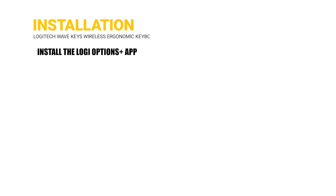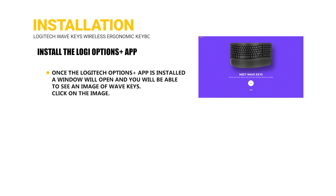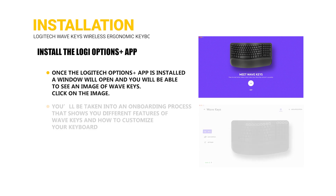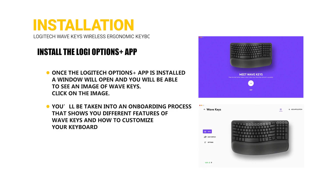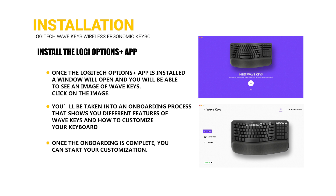Install the Logitech Options Plus app. Once installed, a window will open and you will be able to see an image of Wave Keys. Click on the image. You'll be taken into an onboarding process that shows you different features of Wave Keys and how to customize your keyboard. Once the onboarding is complete, you can start your customization.